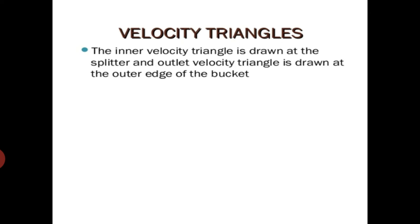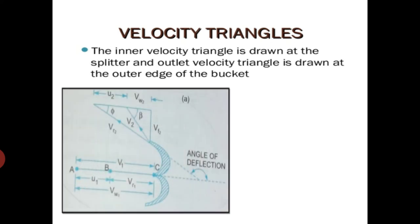Velocity triangles are very important for the Pelton wheel bucket. Drawing the velocity triangle helps us calculate the force exerted by the jet, and also the work done by the jet or the power of the jet. The velocity triangle is drawn at the splitter (inlet) and at the outlet. This figure shows how the velocity triangle is drawn for the Pelton wheel bucket — this is the side view of the bucket.